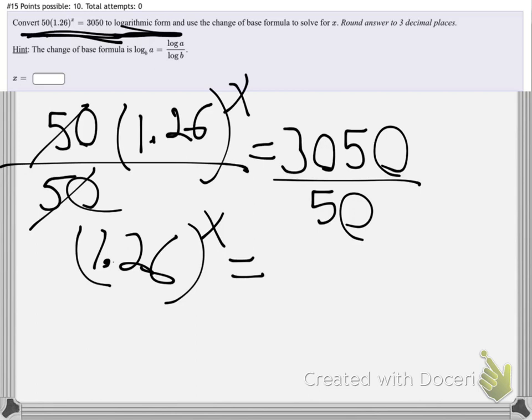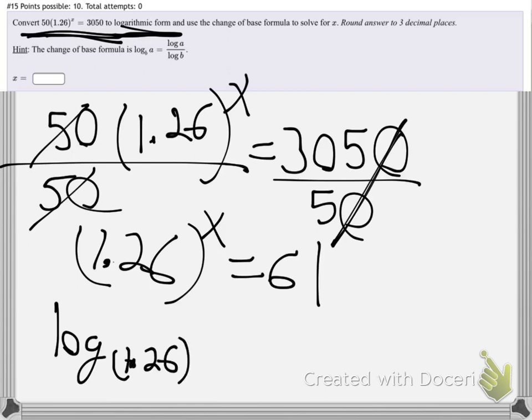Then we have 1.26 to the x power equals 3050 divided by 50. 0s cancel, then it's 5 into 305. 5 into 300 would go 60 times. So this is 61. So then we'll say 61. And then now from here, we've got to put this in the log form because it's hard to solve this if my variable is up in the exponent spot. That's what logarithms are all about. And so we'll fix that. And we'll say this is log base 1.26 of 61 equals x. And now if you've got a real strong calculator, it might actually let you just choose 1.26 as a base and just shove it in the calculator that way.